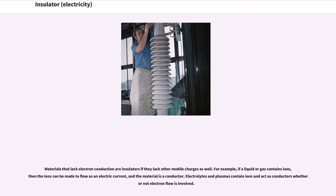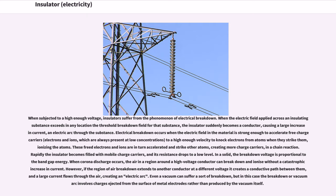Electrolytes and plasmas contain ions and act as conductors whether or not electron flow is involved. When subjected to a high enough voltage, insulators suffer from the phenomenon of electrical breakdown. When the electric field applied across an insulating substance exceeds the threshold breakdown field, the insulator suddenly becomes a conductor, causing a large increase in current, an electric arc through the substance.